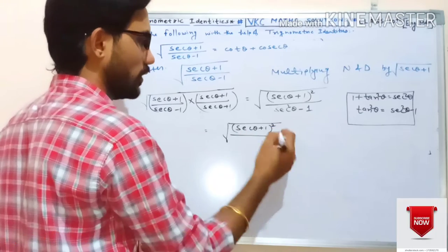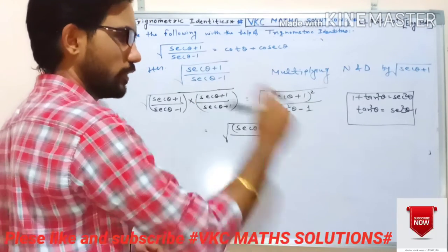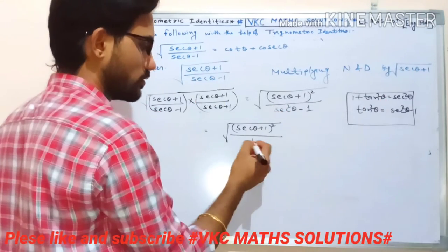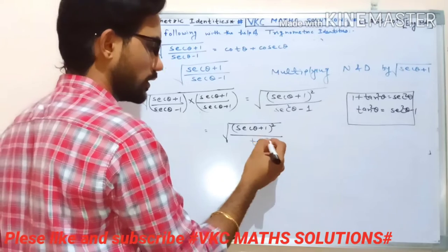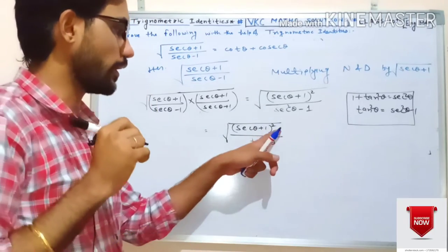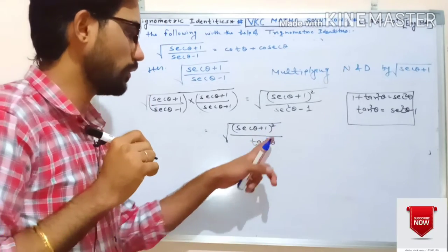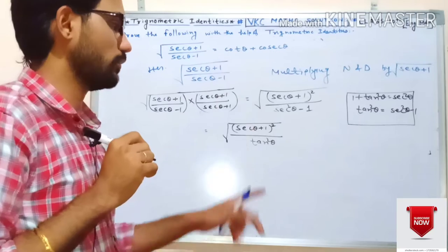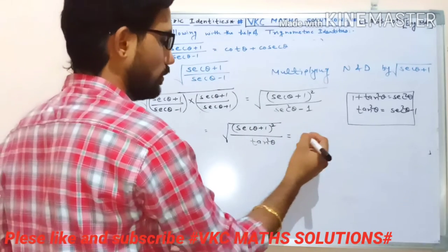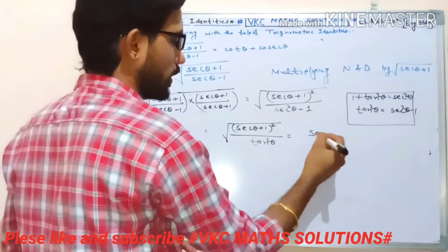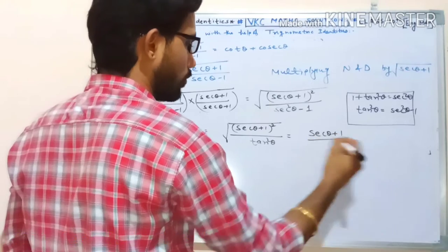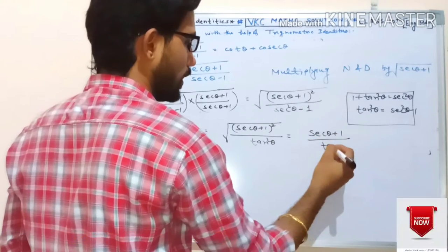Since sec²θ − 1 = tan²θ, we write tan²θ in the denominator. Now both the numerator and denominator are perfect squares, so the square root removes both squares. The answer becomes (secθ + 1) / tanθ.